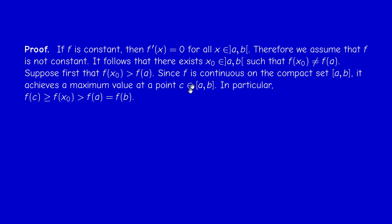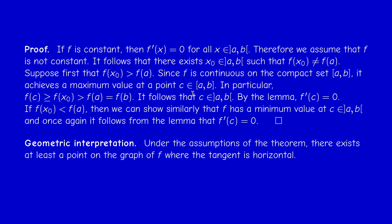Now C cannot equal A or B, because F(C), being the maximum, must be at least F(X₀), which is strictly bigger than F(A), so C cannot equal A. And since F(A) = F(B), C cannot equal B either, so C must be strictly inside. We have a maximum inside the interval, and by the lemma, F prime must vanish at this point. If F(X₀) < F(A), the situation is completely symmetric: F has a minimum strictly inside, and once again F prime of C is 0.